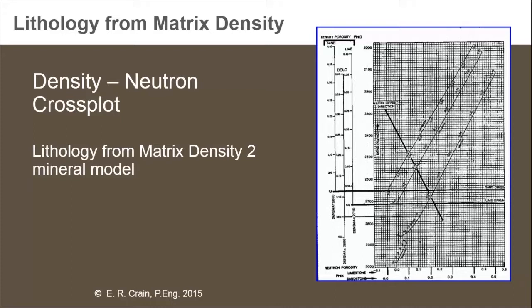So these diagonal lines really represent different matrix densities. By plotting data points on this graph, or using the mathematics that this graph represents, we can calculate the matrix density of any particular data point on our log.